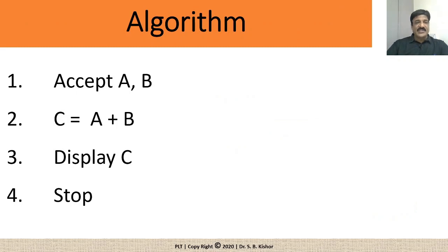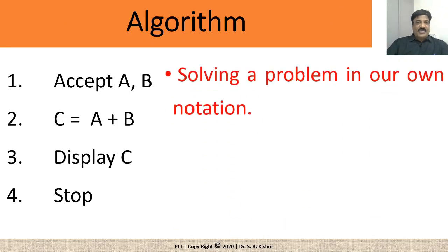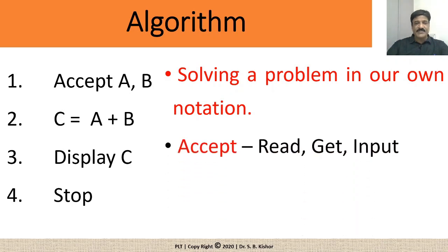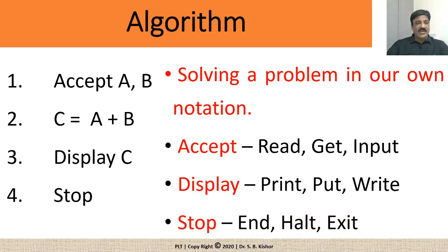Solving a problem in our own notation. So, what do we mean by notation here? It is not compulsory for me to write accept or display or stop word only. Instead of accept, someone may use read, get or input. Someone may write print, put or write instead of display or someone may use end, halt and exit instead of writing a stop statement. It means the notation that has been used by a programmer may differ while writing an algorithm from person to person. There is no compulsion that you should use only accept, display or stop.